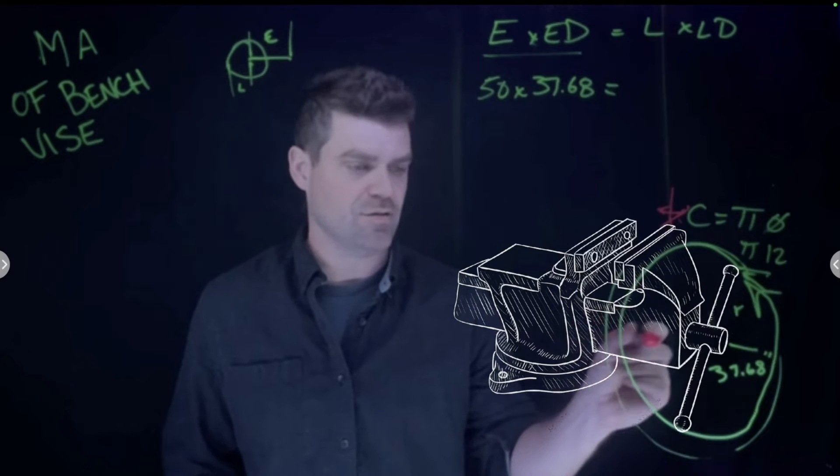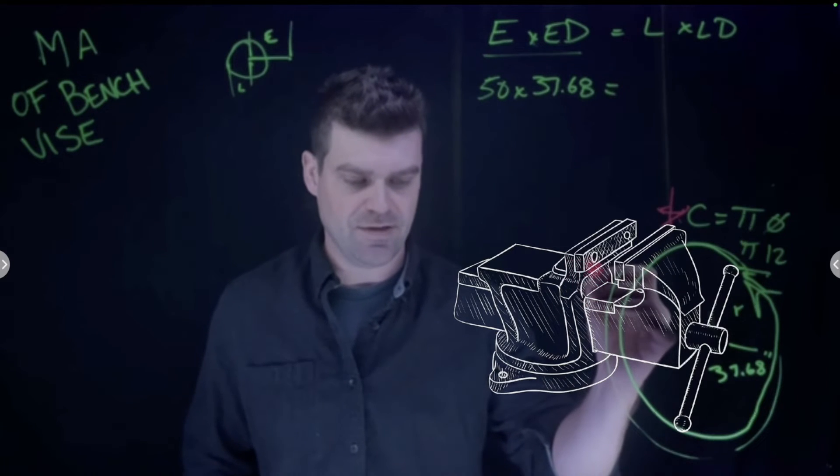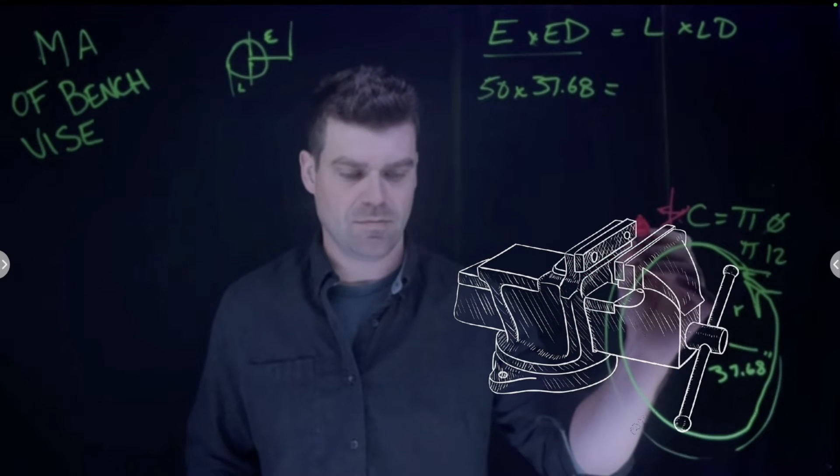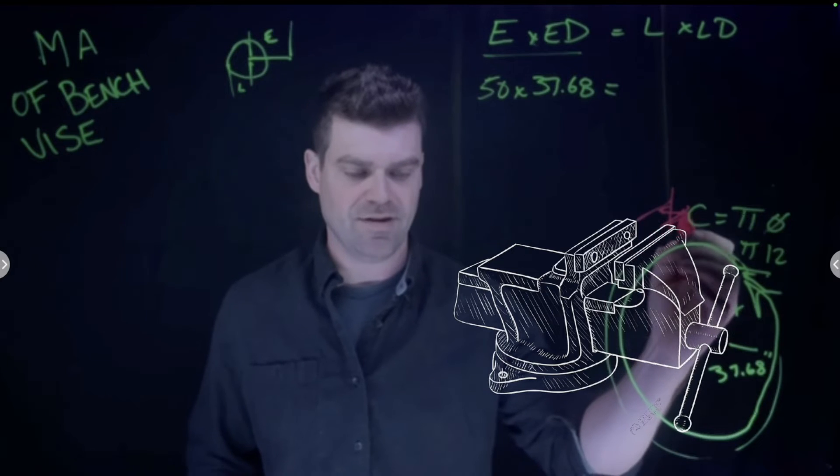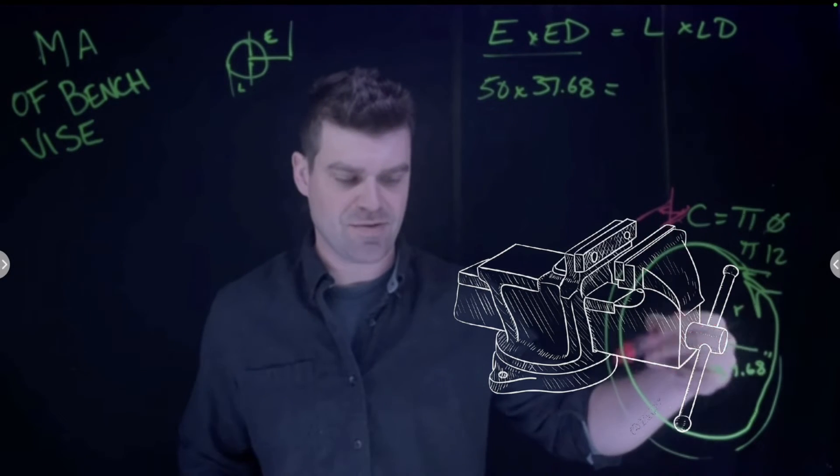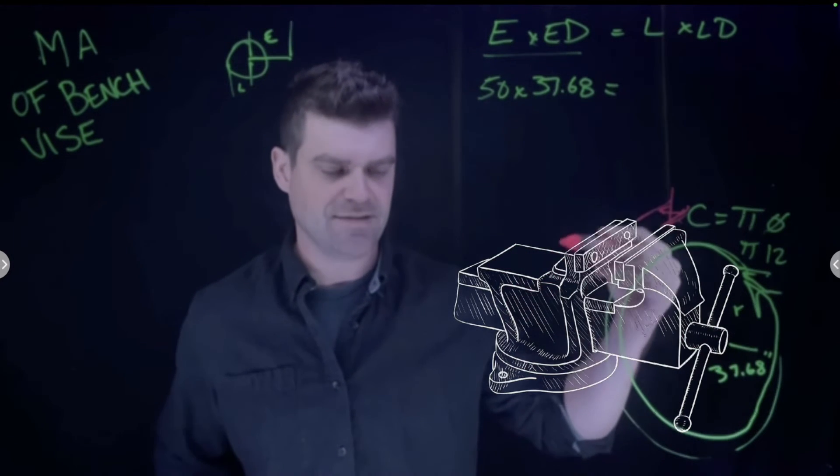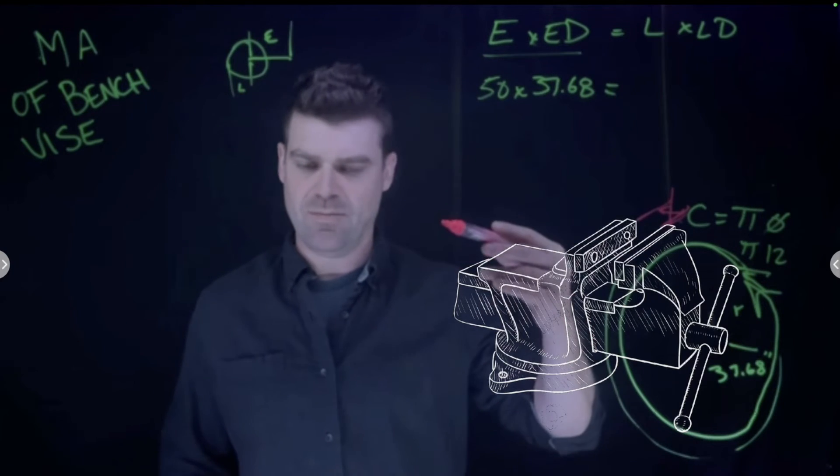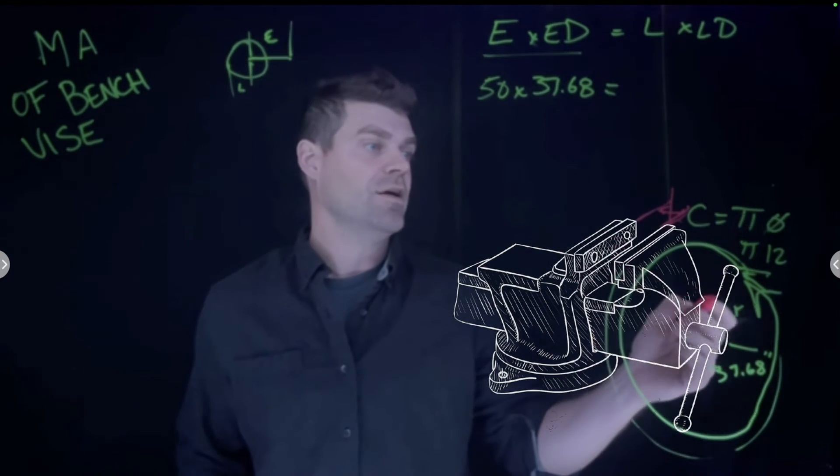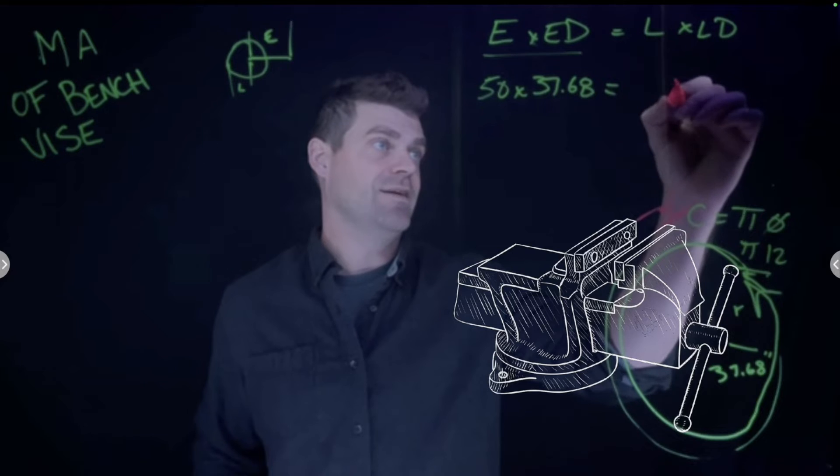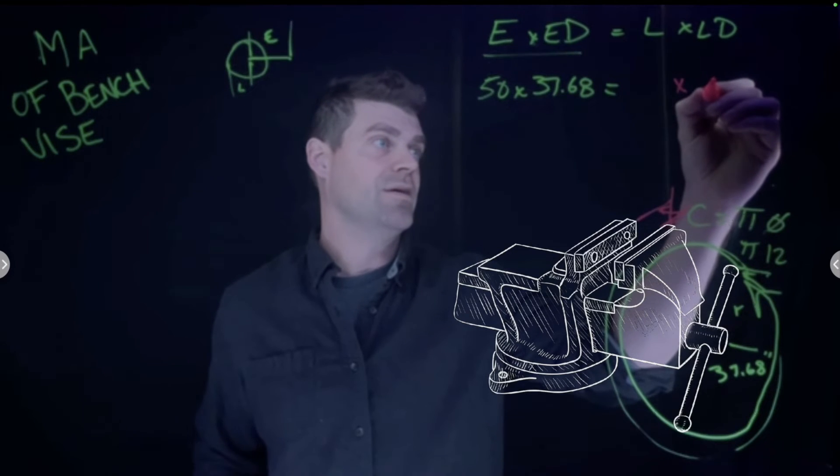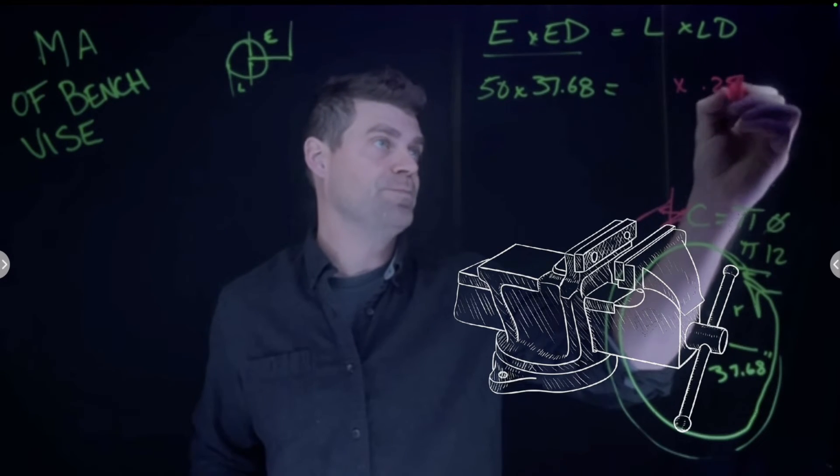The answer is one pitch of the screw that's inside there. If we looked at the acme thread inside our vise and one turn moves a quarter inch, then our load distance is 0.25 inches.